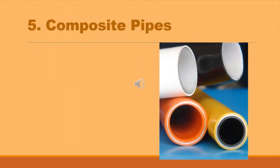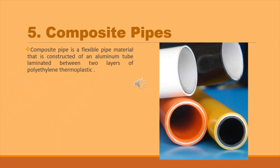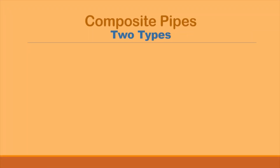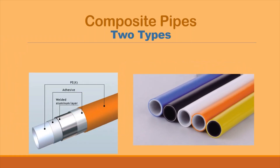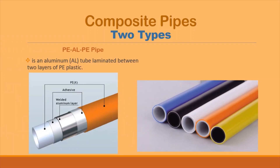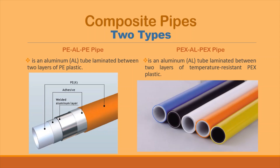Composite pipe is a flexible pipe material constructed of an aluminum tube laminated between two layers of polyethylene thermoplastic. There are two types: PLP pipe, which is an aluminum tube laminated between two layers of PE plastic, and PEx Alpex pipe, which is an aluminum tube laminated between two layers of temperature-resistant PEx plastic.